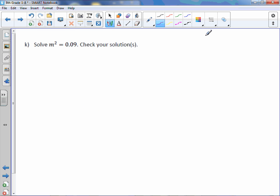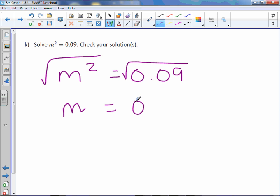Letter K. M squared equals 0.09. Find the square root. M equals 0.3 and negative 0.3.